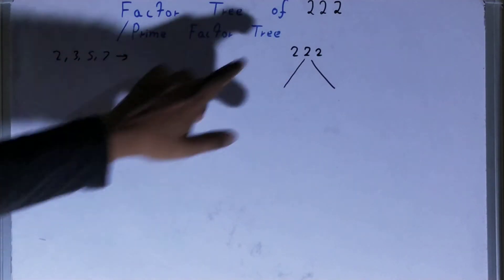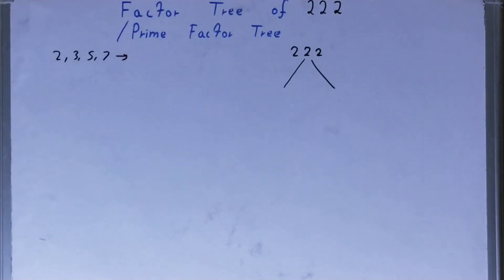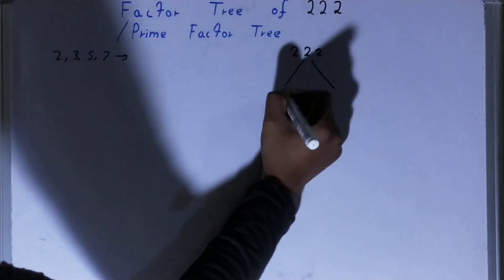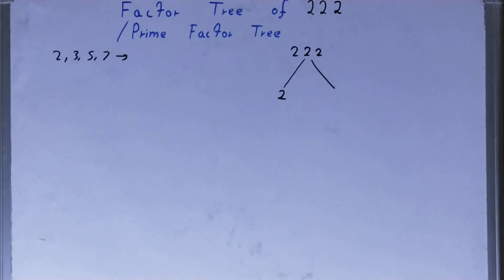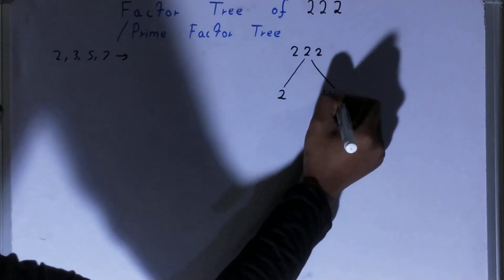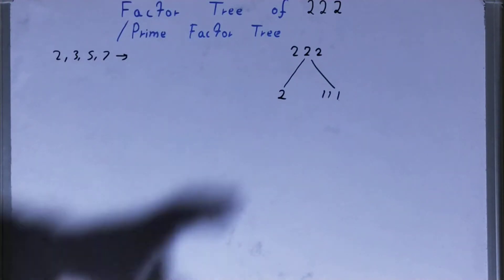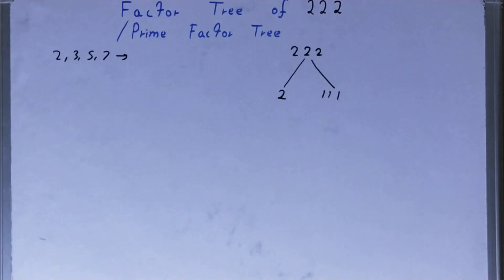So because of this we check: is the number 222 divisible by 2? Yes, so one of the numbers will be 2, the other will be whatever we get after dividing. So 222 divided by 2, what we get? We get 111. Now do we need to factorize this 111 also?